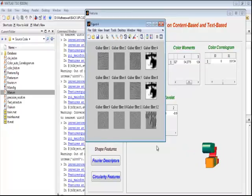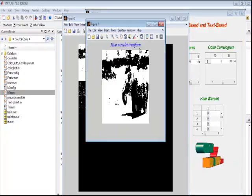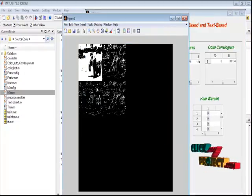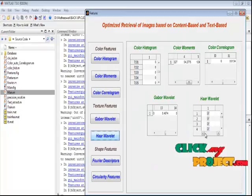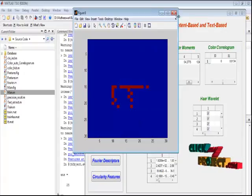And by pressing the Gabor wavelet, we can perform the Gabor wavelet function. This is the real and imaginary part of the Gabor filter, and here Gabor wavelet feature values are displayed. By pressing the Haar wavelet, we can perform the Haar wavelet transformation. This is the representation for Haar wavelet feature, and here I display the Haar wavelet with the help of the Boolean distribution.